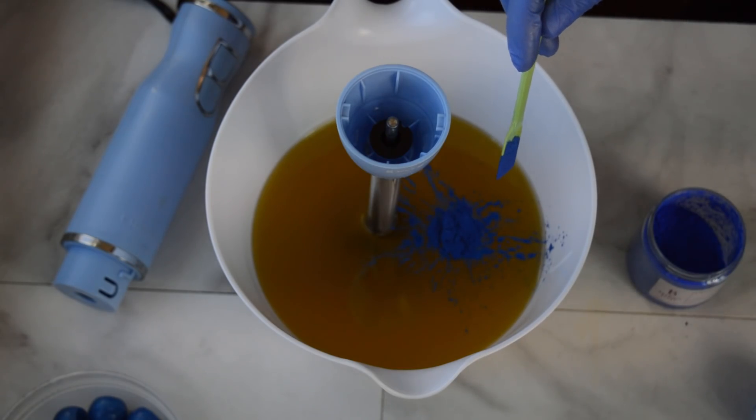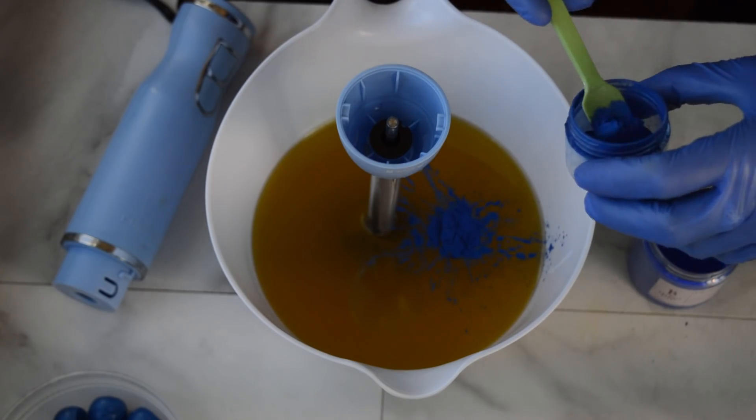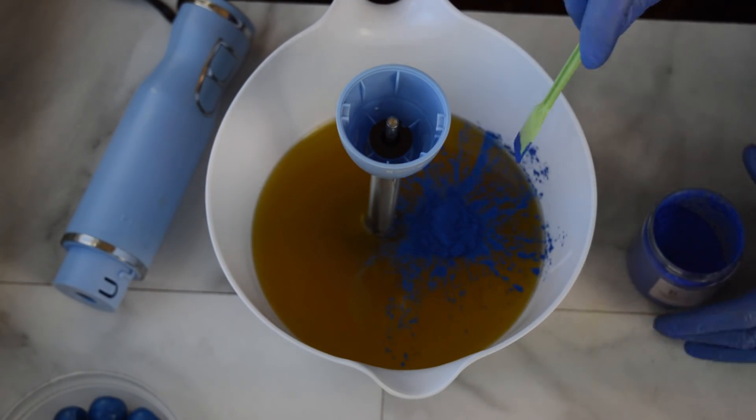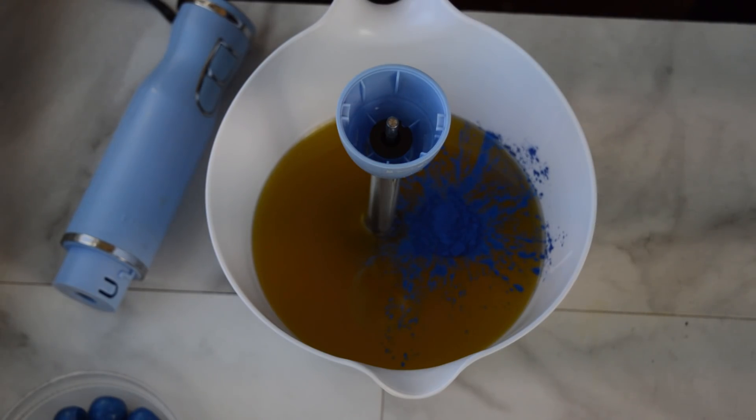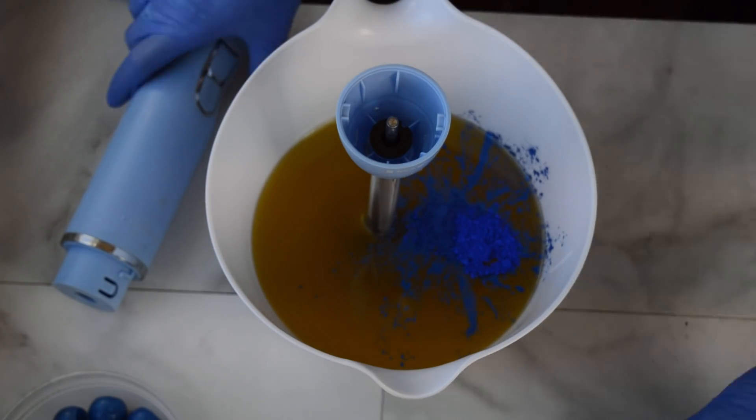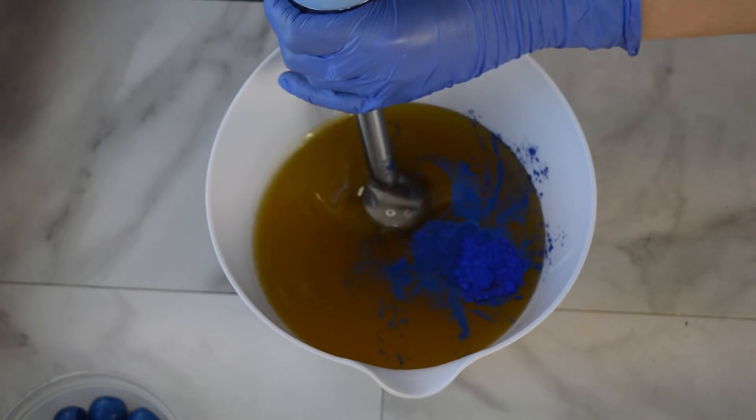I am going to put in some blue mica, and I have no idea what this color is. This is from Stardust Micas, and when you peel it open, it peels off the label, and now I have no idea what it is. But I thought it was a very pretty blue. So, we'll put that in and some ultramarine blue pigment from Bramble Berry, and we're going to make this a very, very blue frosting.